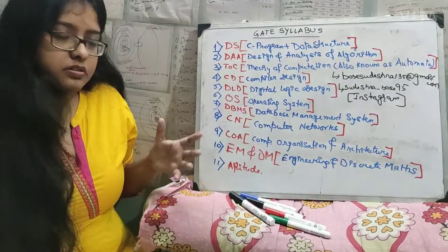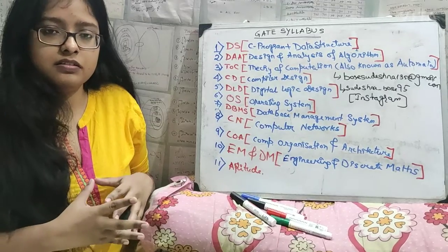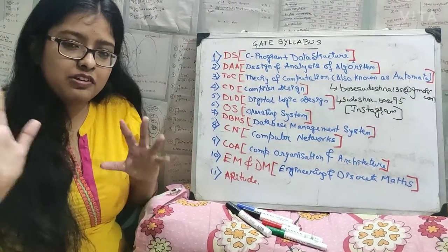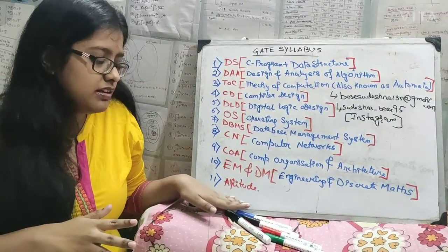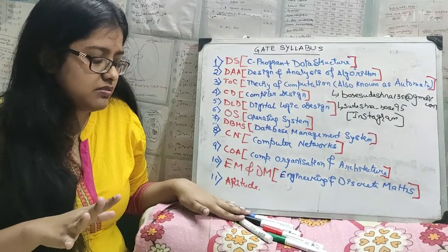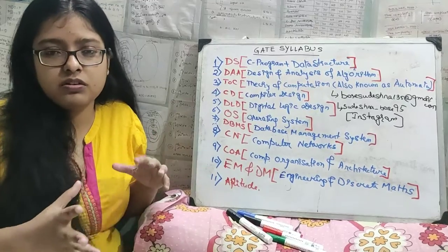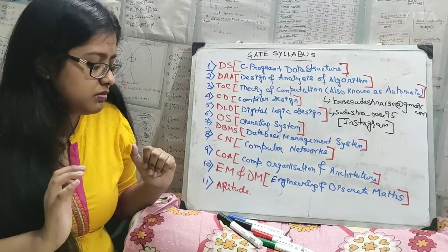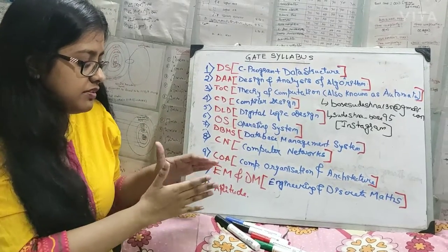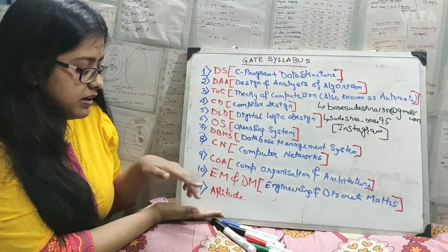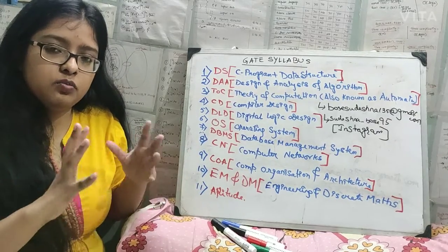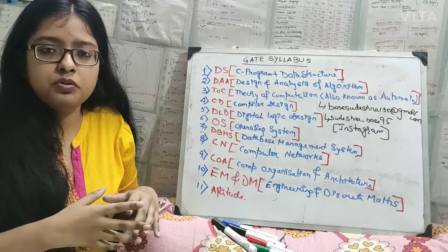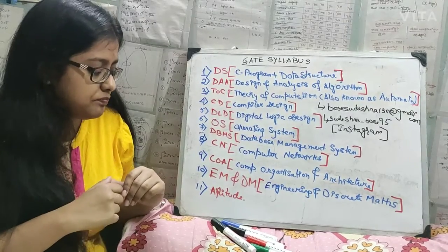Next is aptitude. Aptitude is easy in GATE — it doesn't come at a very high difficulty level, so don't think like that. Also, English is very easy. You don't have to read books for this. If you practice, it will be helpful. You can give some separate time for mathematics, EM, DM, and aptitude — like one or two hours of your preparation, or when you have more time you can give them.